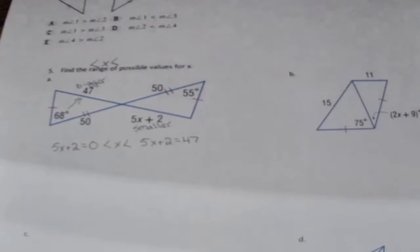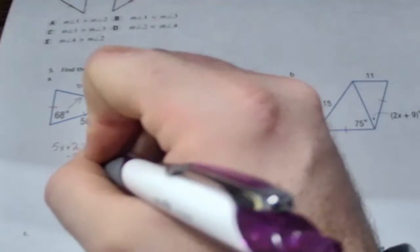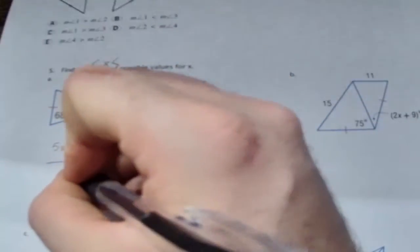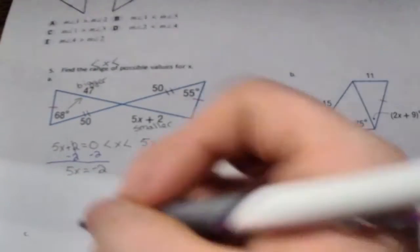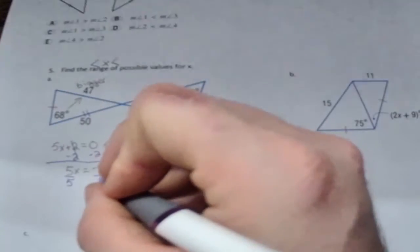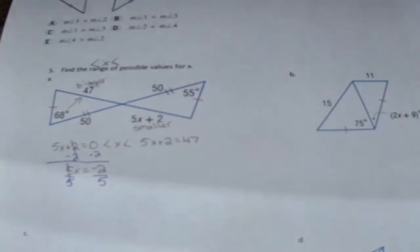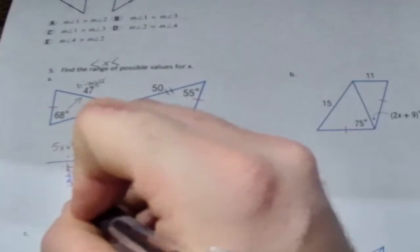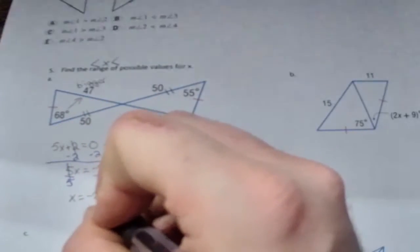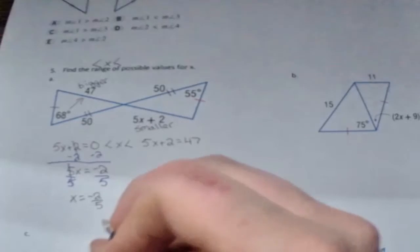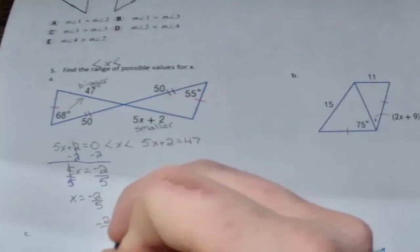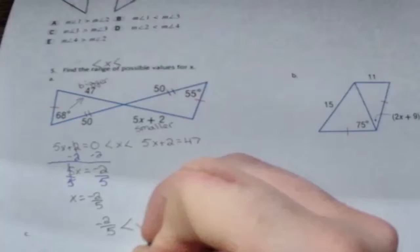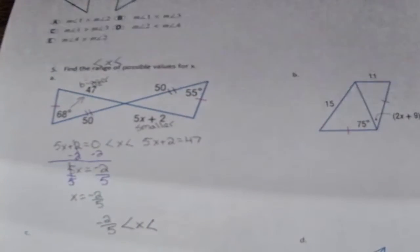On the left side I'm going to start off by subtracting 2 from both sides. That will get me 5x equals negative 2. Last step, divide by 5 on each side, and x equals negative 2 over 5. So on the left side I'll have negative 2 over 5 less than x less than - now we just need to find what's going to be on the right side.